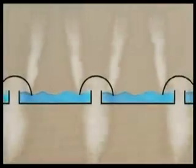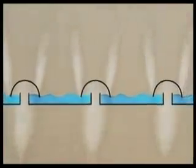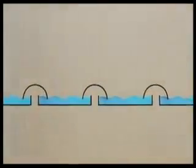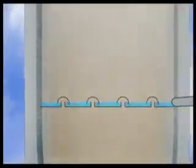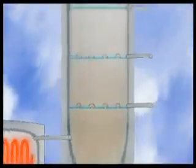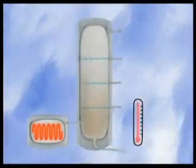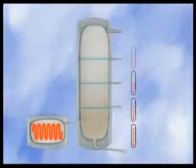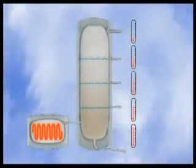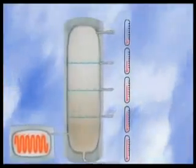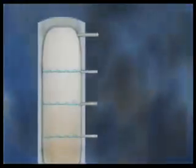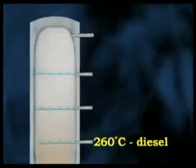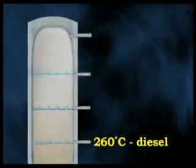The distillation process is based on this fact: different hydrocarbons condense out of the gas cloud when the temperature drops below their specific boiling point. The higher the gas rises in the tower, the lower the temperature becomes. The precise details differ at every refinery and depend on the type of crude oil being distilled, but at around 260 degrees Celsius, diesel condenses out of the gas.